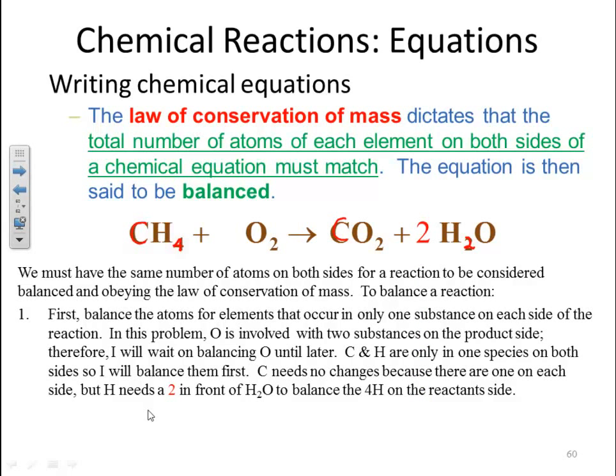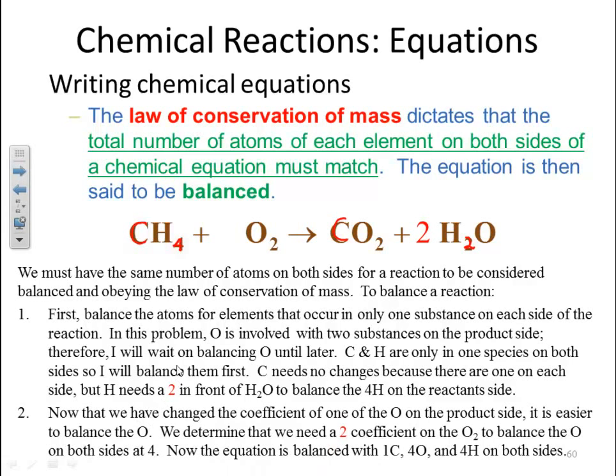Now when I do that, now I can see that I've now changed the oxygens. Now we have changed the coefficient of one of the oxygens on the product side. It's going to be easier to balance the oxygens. We can determine that we now need 2 coefficients on the O2 side to balance the oxygen on both sides to four. You can see I've got one carbon on both sides. I have four hydrogens on both sides. I now have four oxygens on this side and only two oxygens on the reactant side. So to balance this, all I need to do is put a 2 coefficient in front of the O2 and then I would have that as balanced as well.